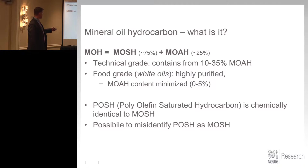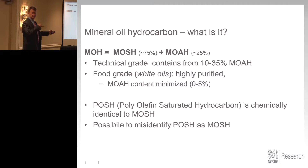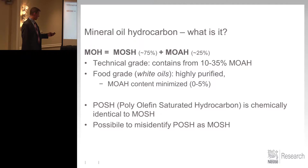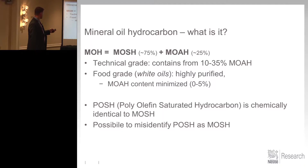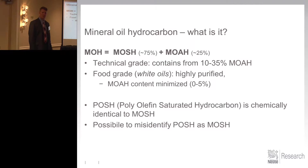Mineral oil hydrocarbons: MOSH, the saturated, is about 75%, give or take 5 or 10%. MOAH around 25%. Technical grade contains 10 to 35% MOAH. Food grade — white oils — highly purified, and content is minimized for MOAH.